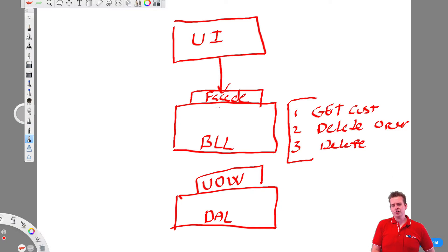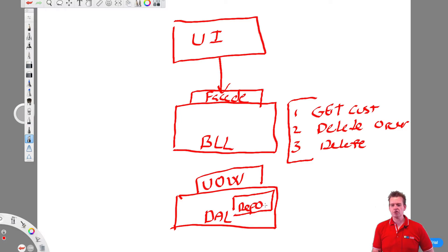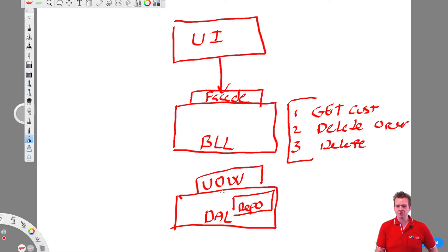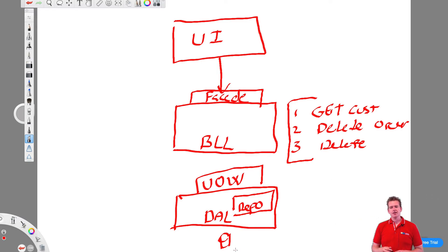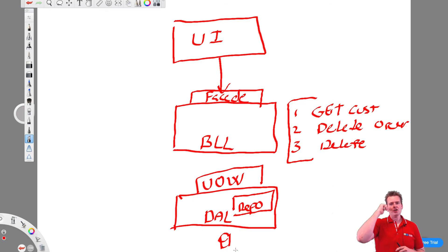That's what a unit of work can be used for. Now the unit of work is actually going to communicate through something we call the repository pattern, which is also something we want to implement. I'll just call it 'repo' here. The repository pattern is a way for us to communicate with the database — it will help us define how we communicate with the database, work with and manage data in memory, ship it to the database, and only pull out the parts we need before we manipulate them.